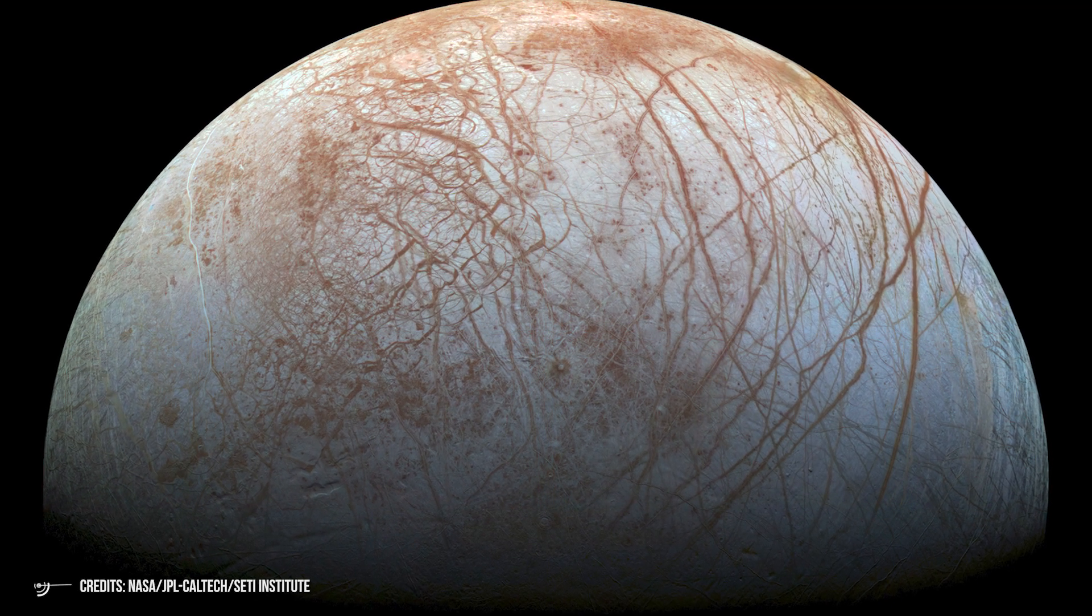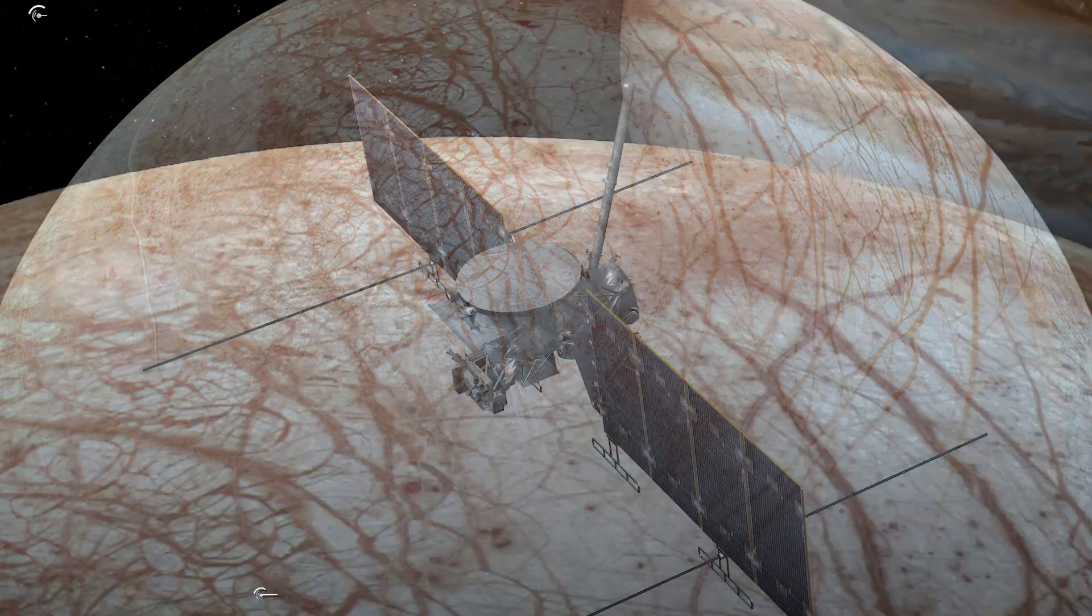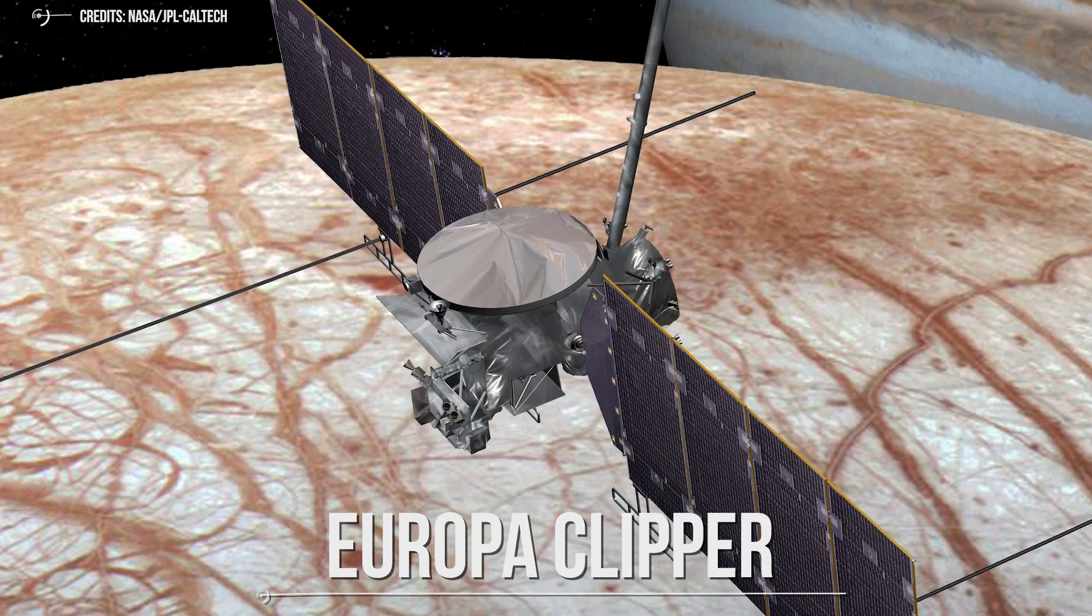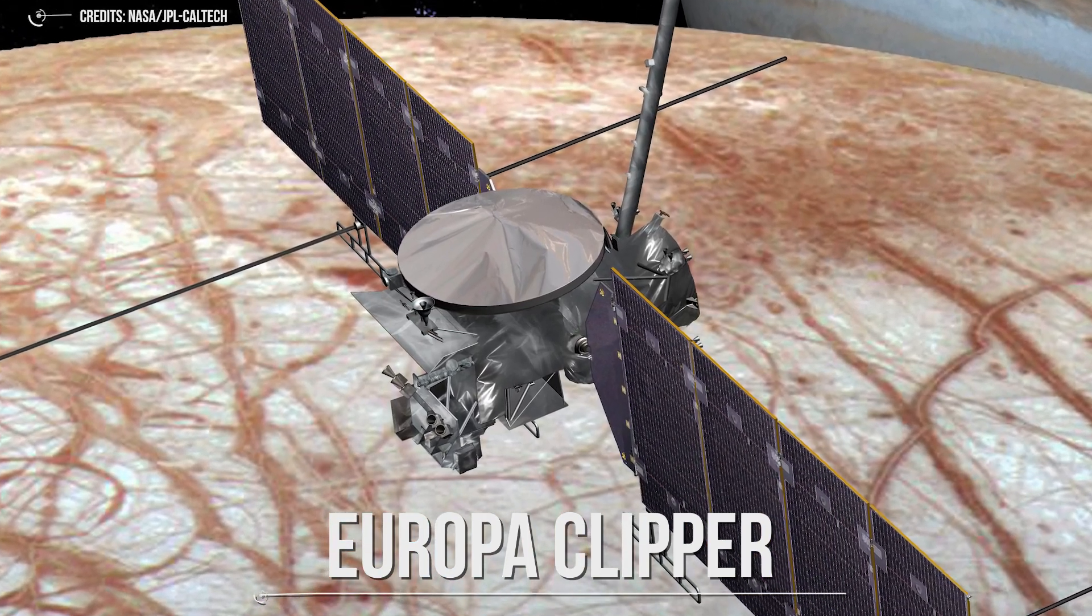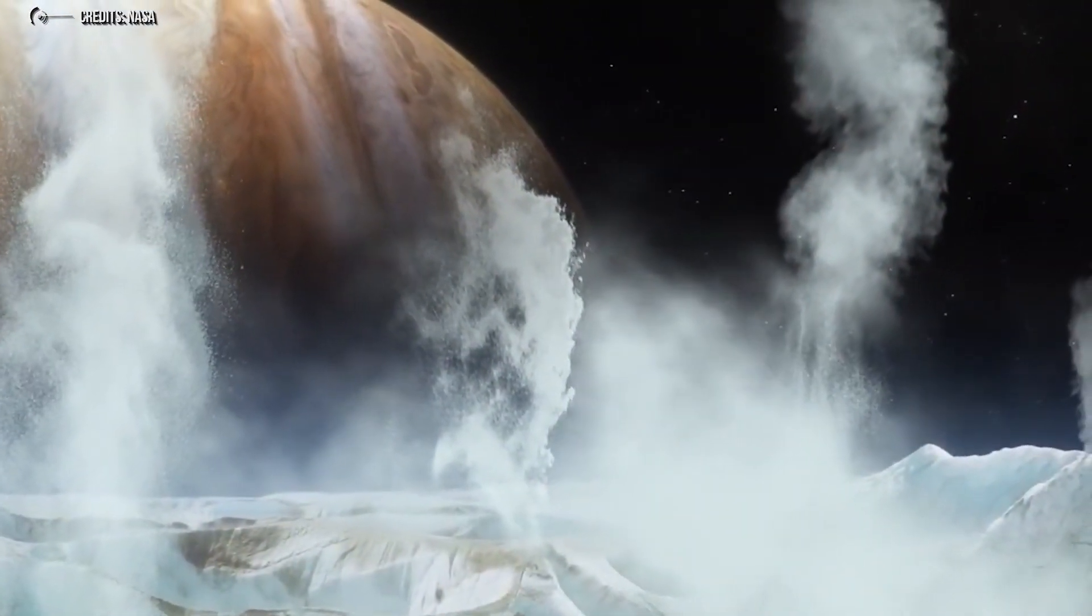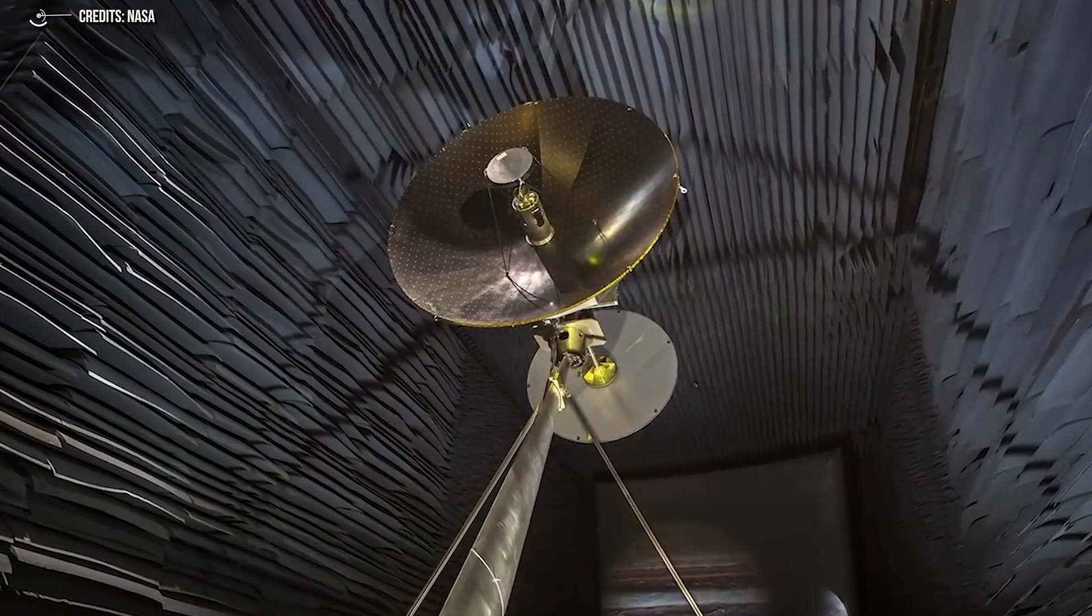Today, Europa is believed to be our best bet to find extraterrestrial life by many scientists. In 2024, NASA spacecraft Europa Clipper will be launched aboard SpaceX's Falcon Heavy rocket, on a mission to determine whether Europa can support life. Seven years after the launch, Clipper is scheduled to make its first encounter with Europa on March 7, 2031.